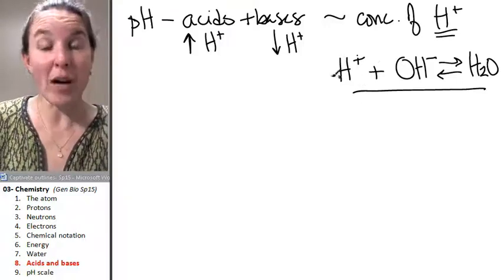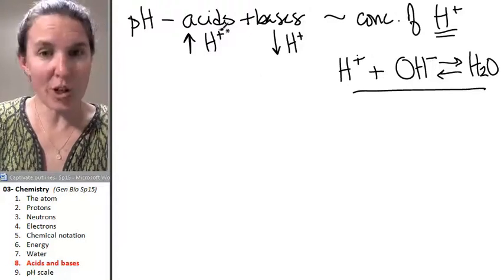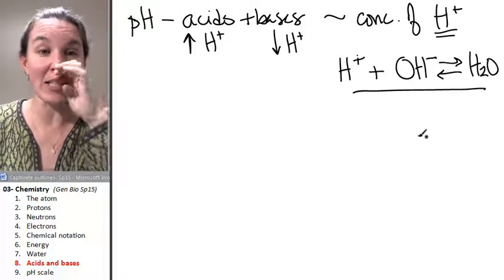If you have a bunch of these guys in a system, you're going to have an acidic system. If you don't have very many, you're going to have a basic system.